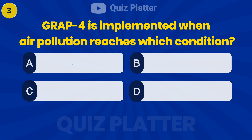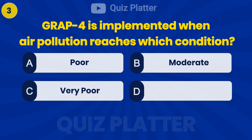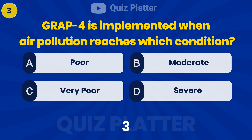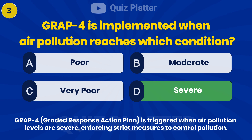GRAP 4 is implemented when air pollution reaches which condition? Answer: D — Severe.